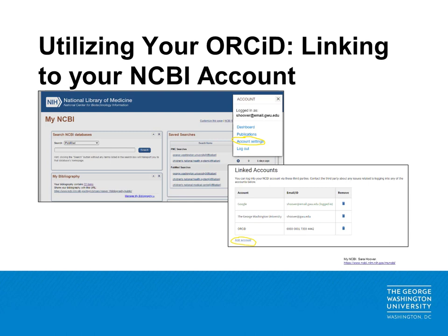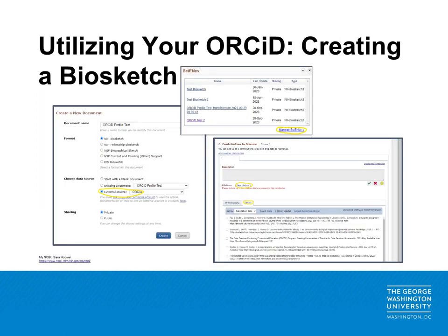One great feature of having an ORCID account is the ability to link to the NCBI platform in order to populate information for an NIH or NSF biosketch. When logged into your NCBI account, start by going to the account settings link under the account information in the top right-hand navigation. Go to the section for linked accounts and click the add account button to link your ORCID account to the NCBI platform. To use your ORCID profile to populate a biosketch, start by going to the ScienceCV section of your NCBI account. Click on the Manage ScienceCV link and create a new document. Under Format, select the type of biosketch you would like to create, and then in the Choose Data Source selection, click the External Source section and select ORCID. In the Citation section, click the ORCID tab and check the boxes in the left-hand navigation to add specific publications to your biosketch.